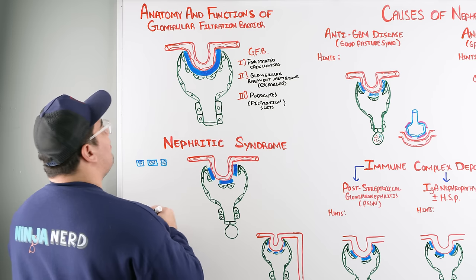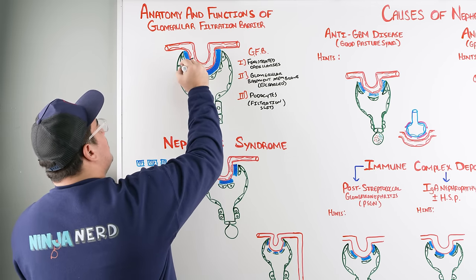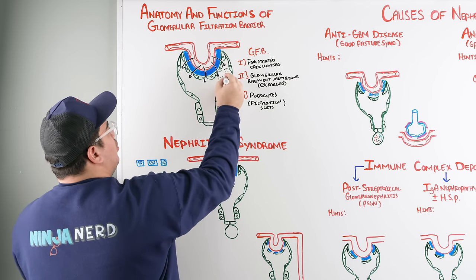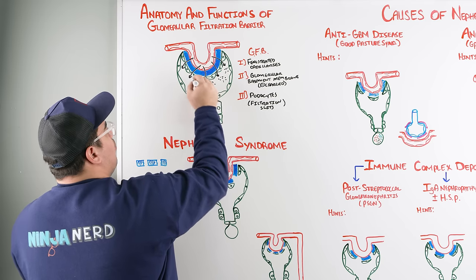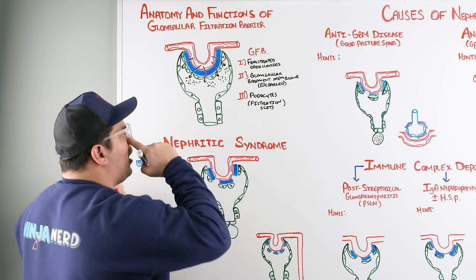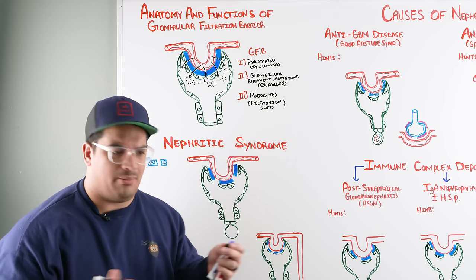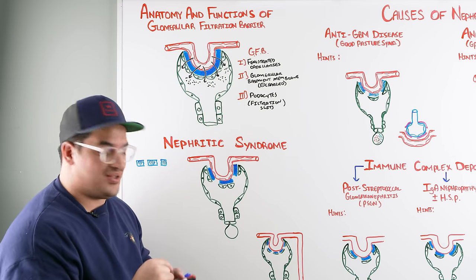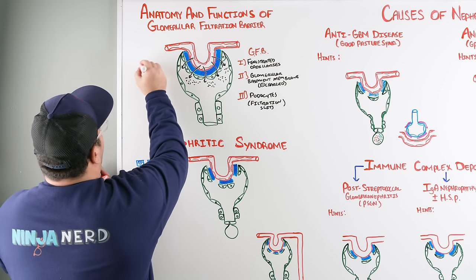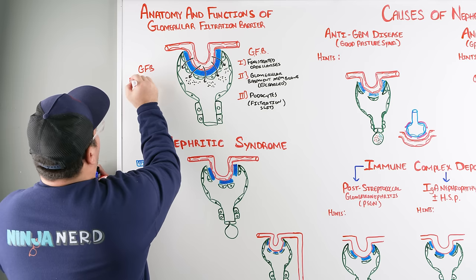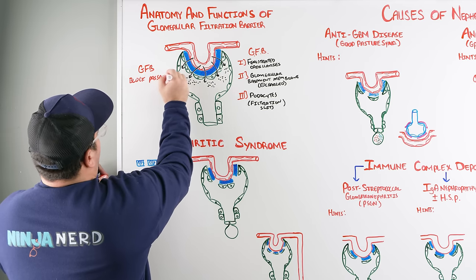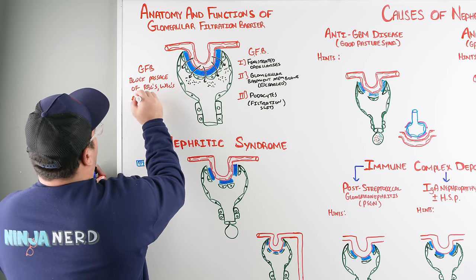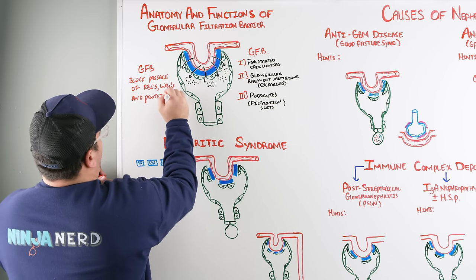The whole job of the glomerulofiltration barrier is to prevent large things from leaking out. We want small molecules like amino acids, glucose, sodium, electrolytes, water, and metabolic waste products to filter across and be excreted in urine. What the GFB is supposed to block is the passage of red blood cells, white blood cells, and proteins.